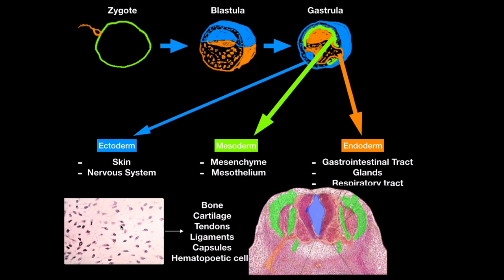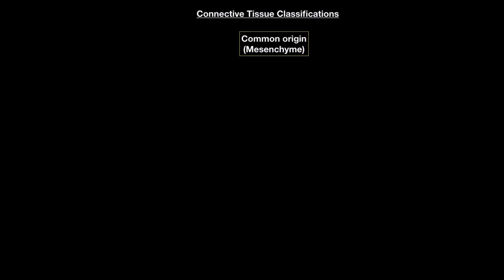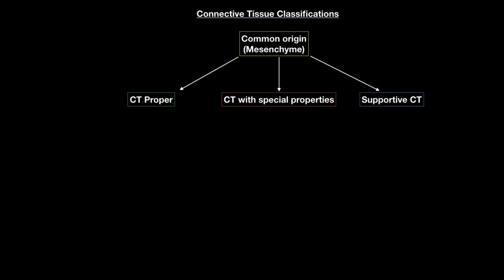Now let's look at the classification of connective tissue. The different types of connective tissue share a common origin — the mesenchymal cells. We classify connective tissue into connective tissue proper, connective tissue with special properties, and supporting connective tissue. Connective tissue proper includes loose and dense connective tissue, consisting mainly of elastin and collagen fibers.